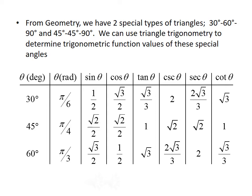For example, if I wanted to find the tangent of 60 degrees, I can look at 60 degrees and see that tangent is square root of 3. If I wanted to find the secant of 30 degrees, I would look at 30 degrees and see that's 2 times the square root of 3 over 3. This table could come in handy when you're working with trigonometry. You may want to take a minute and copy this table down into your notes for future reference.